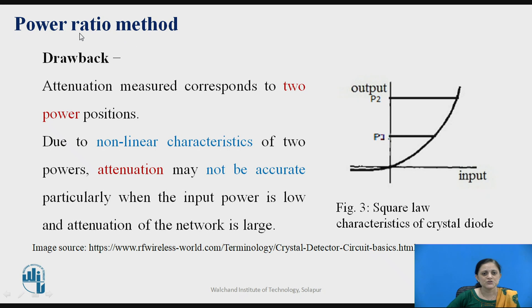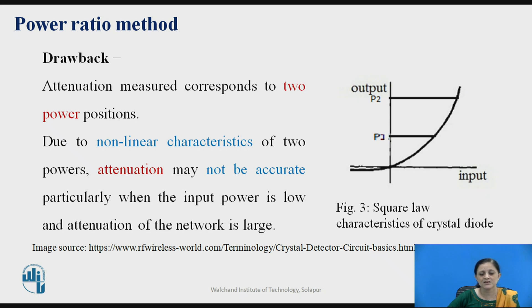However, the power ratio method has a drawback. The two power calculations from Setup 1 and Setup 2 correspond to two different power positions. Considering the square law characteristics of the crystal diode, the graph of input power versus output power shows that these two power positions introduce non-linear characteristics, making the attenuation measurement inaccurate — particularly when the input power is low and the attenuation of the network is large.